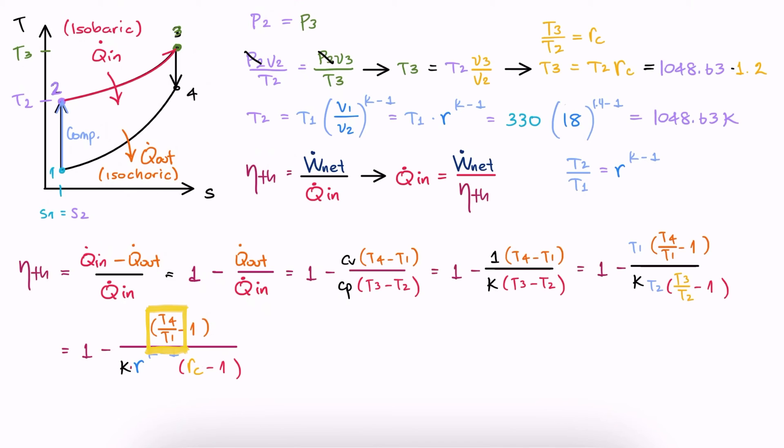From 4 to 1, we need to do a lot more thinking, since all we know is that it's an isochoric process. So, let's start with the 4 to 3 relationship and work our way backwards to get to 4 to 1. 4 to 3 is isentropic.